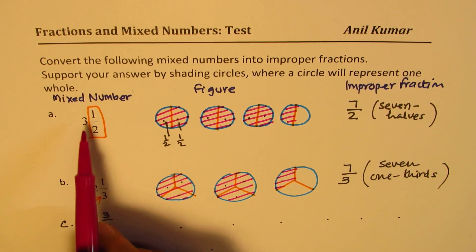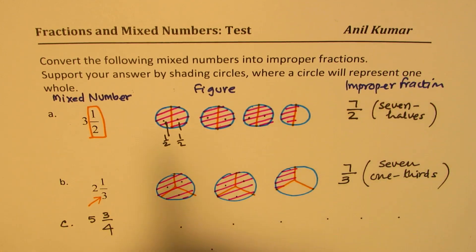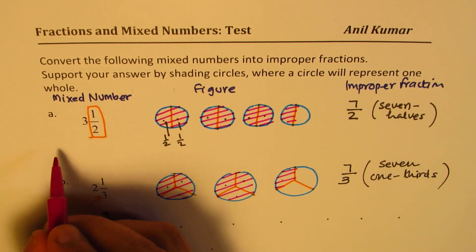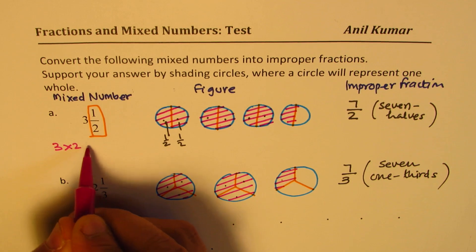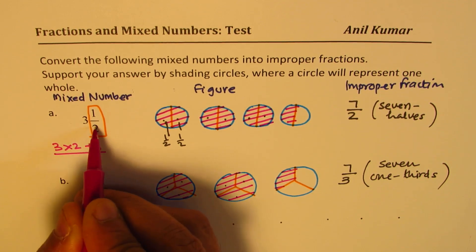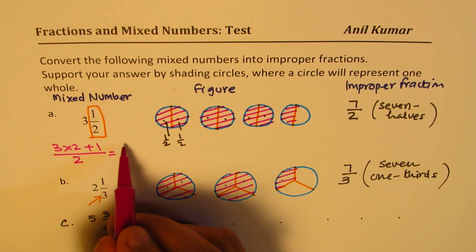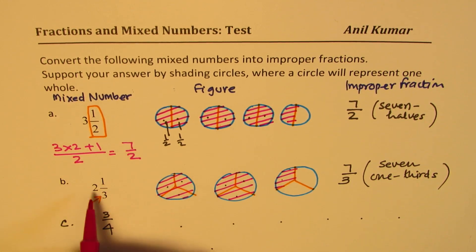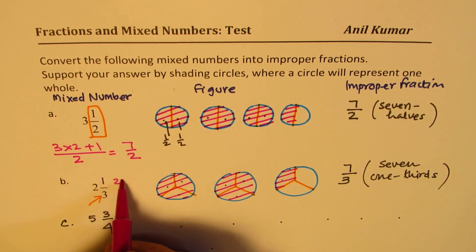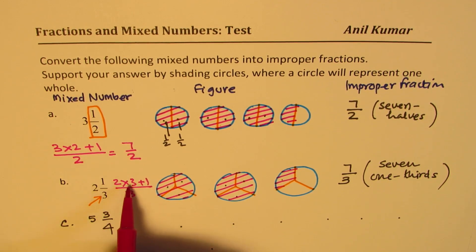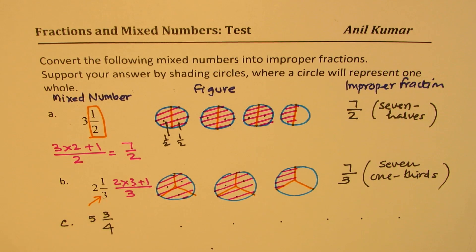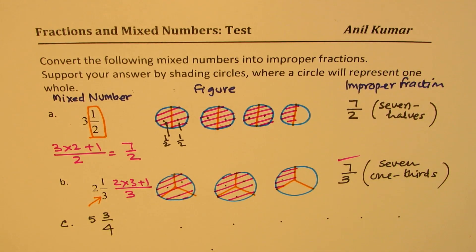We also learned another way of writing them as an improper fraction. We multiply three by two, so you do 3×2 and then add one. The denominator always remains the same. 3×2 is 6, 6+1 is 7, so you get 7/2. Here, we get (2×3+1)/3. 2×3 is 6, 6+1 is 7, so 7/3, which is correct. That is also a way of doing it.